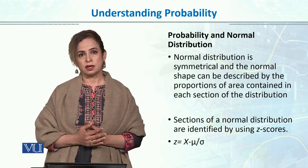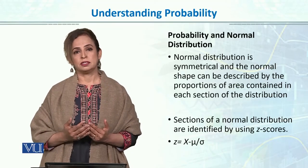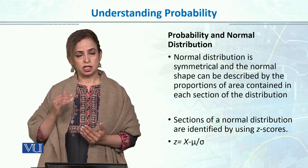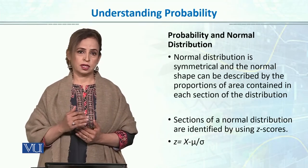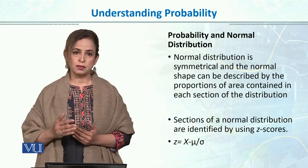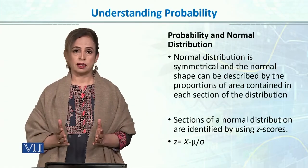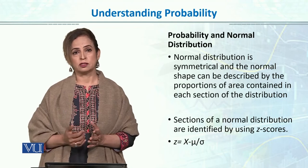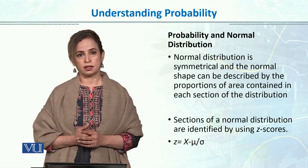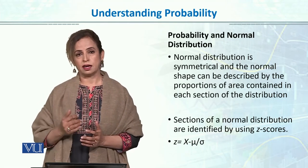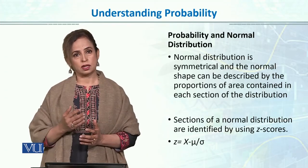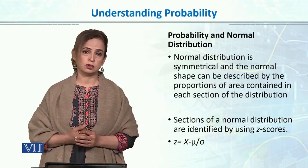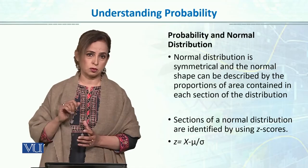We talked about probability and normal distribution. Normal distribution is basically a symmetrical, bell-shaped curve. Within it, the unit of measurement uses standard scores — Z scores. On the normal curve, the total area equals 1, and the area in any specific region represents the probability of an event occurring in that area.